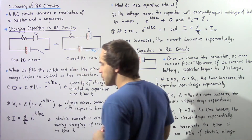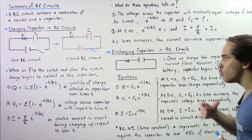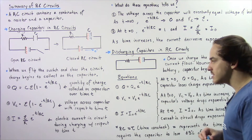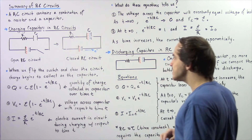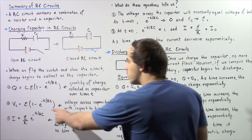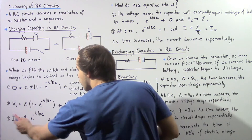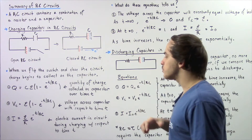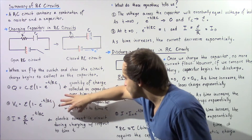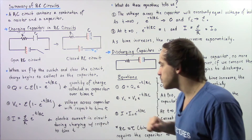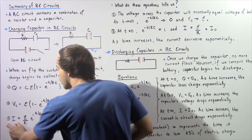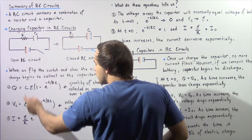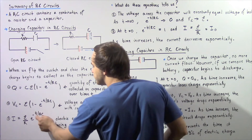Equation two gives us the voltage across our capacitor with respect to time during the charging process. Equation three gives us the electric current that flows through our electric circuit with respect to time during the charging process. The electric current is equal to our electromotive force divided by the resistance R, multiplied by E to the power of negative T divided by RC.